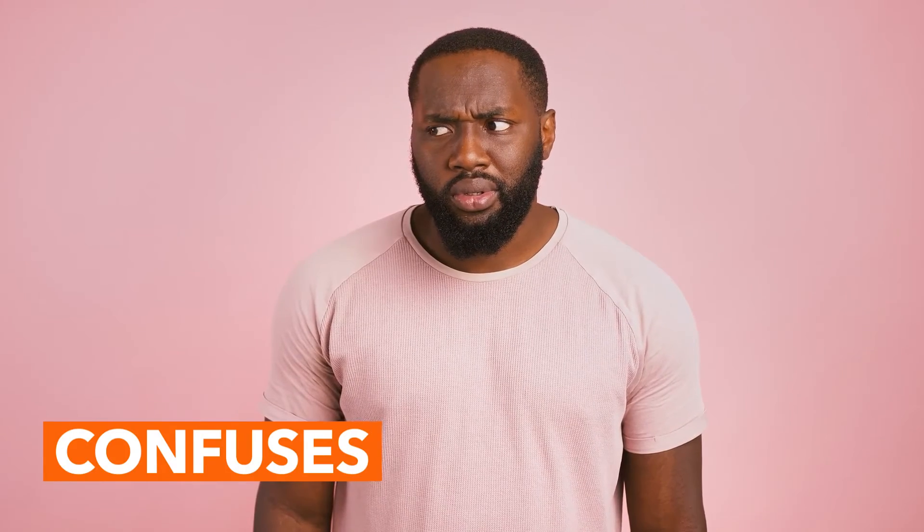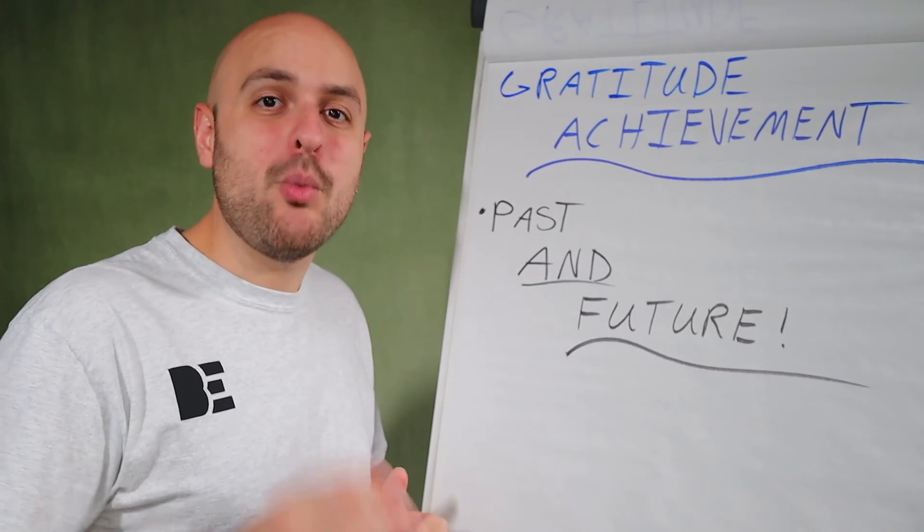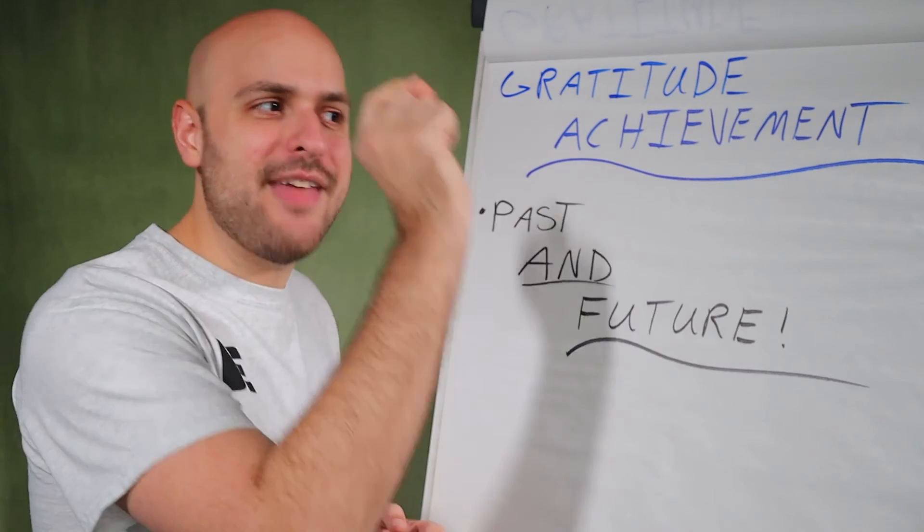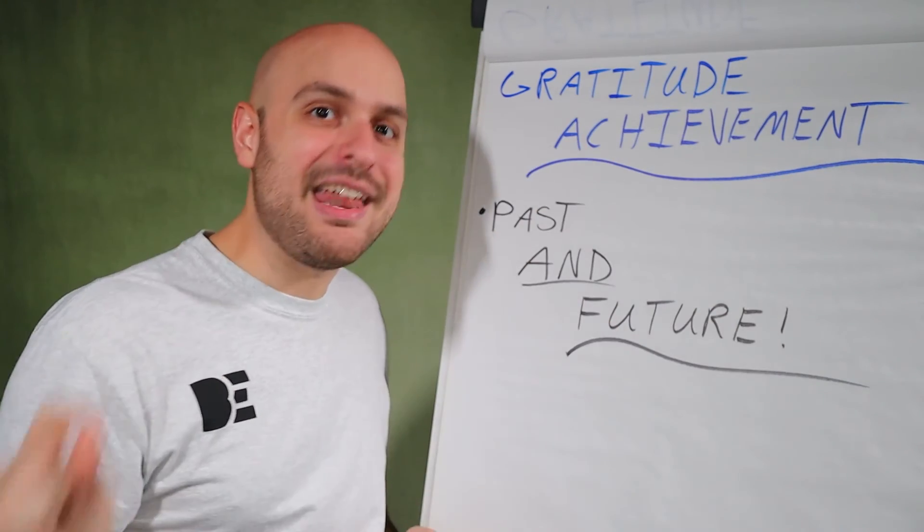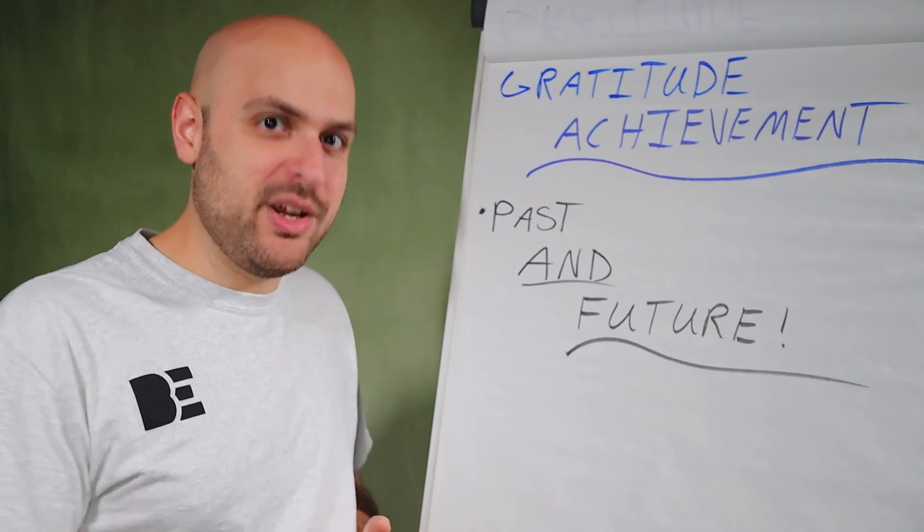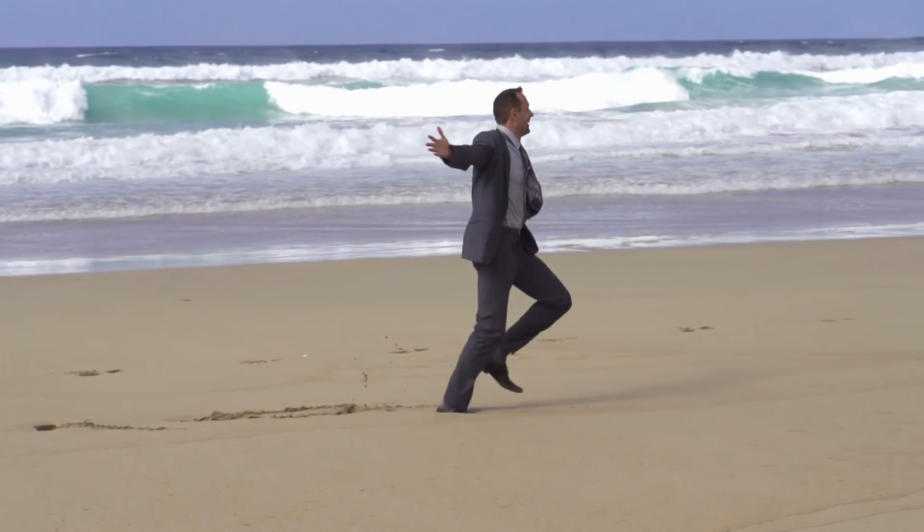And if you tell your brain that you already have something that you don't yet have, it confuses your brain and it causes your brain to want to make things right. And the way that your brain makes it right is it helps you to attract that person, that place, or that thing into your life so that it is real. So visualize and be grateful for the things that you don't even have yet.